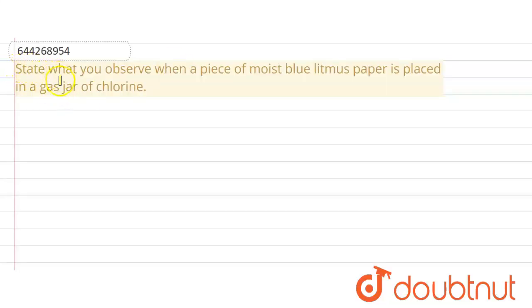Asked about: state what you observe when a piece of moist blue litmus paper is placed in a gas jar of chlorine. Here, moisture-containing blue litmus paper, when chlorine is present in the gas, here it is chlorine gas.